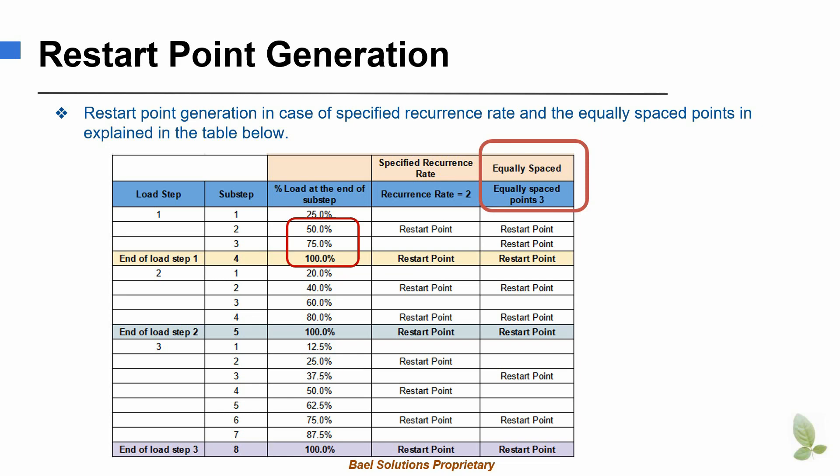These points are equally separated by 25% of the load. While solving the second load step, a restart point is written at sub-step 2. This corresponds to 40% of the load. Similarly, a restart point is written at sub-step 4. This corresponds to 80% of the load. The last restart point is written at sub-step 5. This corresponds to 100% of the load.